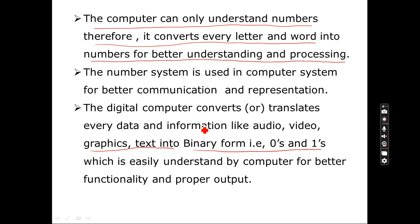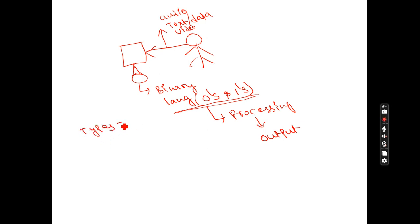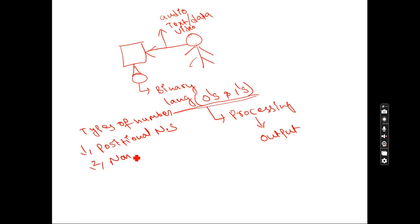So this is the definition of number system. Now, the different types of number systems. Generally we have two types: one is the positional number system and the other is the non-positional number system. In the non-positional number system, in olden days, if you wanted to count any objects, you would use your fingers — one, two, three, four. If the counting went beyond the fingers, people would use sticks and stones to count objects.